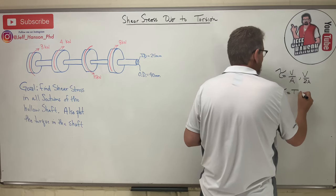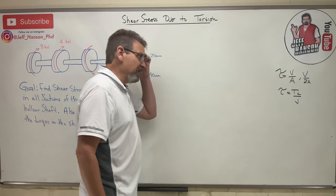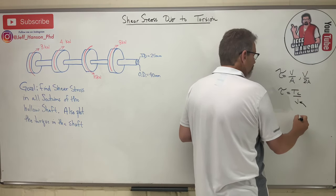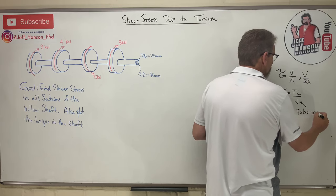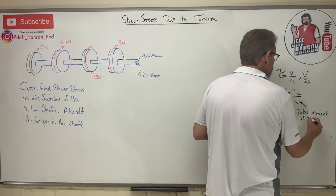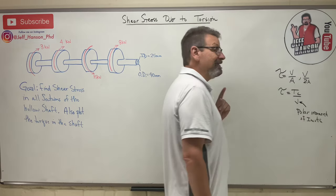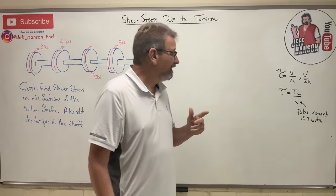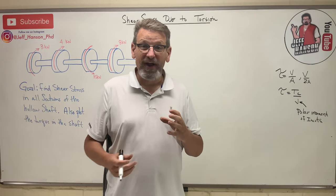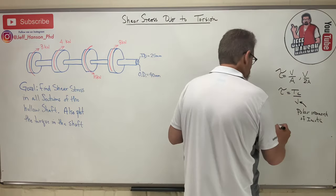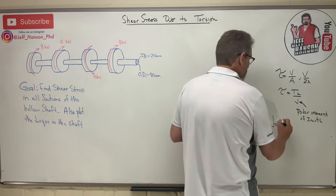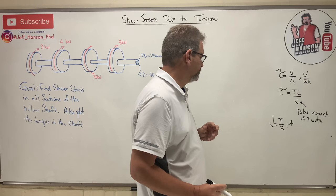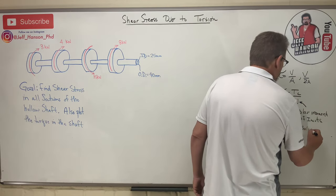The equation of the day is τ = Tc/J. Shear stress in a shaft is Tc over J. Now let's talk about J — that's a new one. J is the polar moment of inertia, not to be confused with the area moment of inertia, which is I. These equations apply to round shafts generally. The equation for J is on your equation sheet: J = π/2 × r⁴, where r is the radius — for a solid shaft.